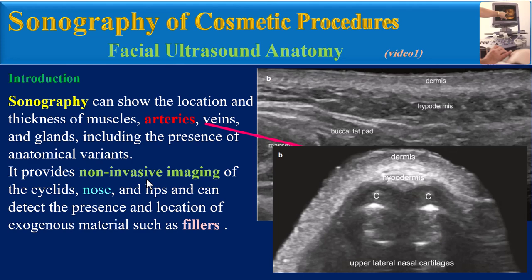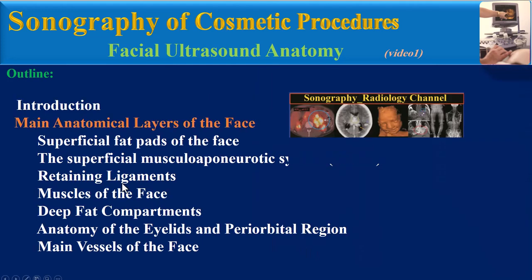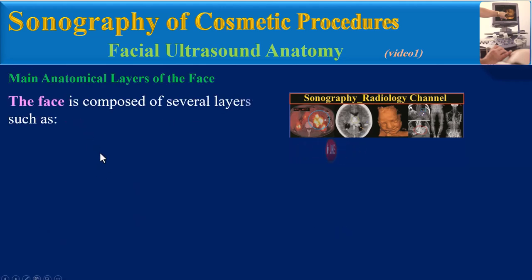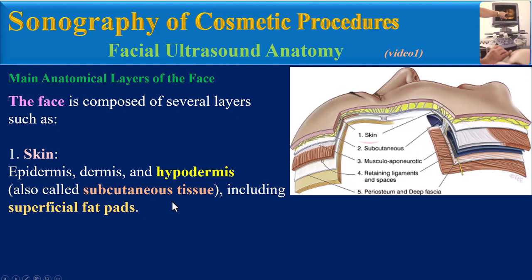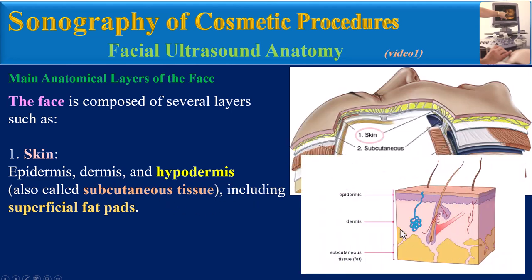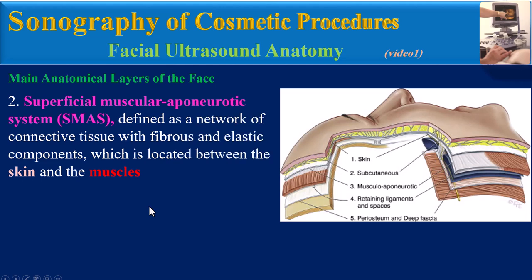It provides non-invasive imaging of the eyelids, nose, and lips, and can detect the presence and location of exogenous material such as fillers. In this video we will have a quick overview of general face anatomy, and in the next video we will review the ultrasound images related to these anatomical areas. The face is composed of several layers such as skin with epidermis, dermis, and hypodermis, also called subcutaneous tissue, including superficial fat pads.